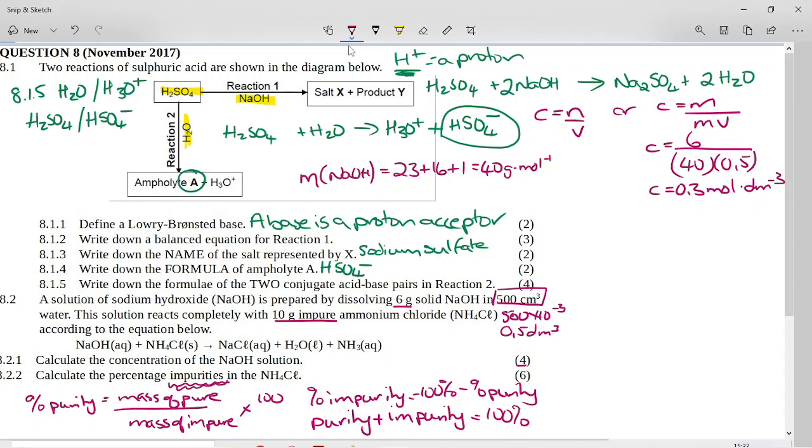So to go about this, it says to you, this solution reacts completely with the impure ammonium chloride. So the only thing it can be reacting with in this 10 grams is the pure ammonium chloride. The rest, the impurities won't react.